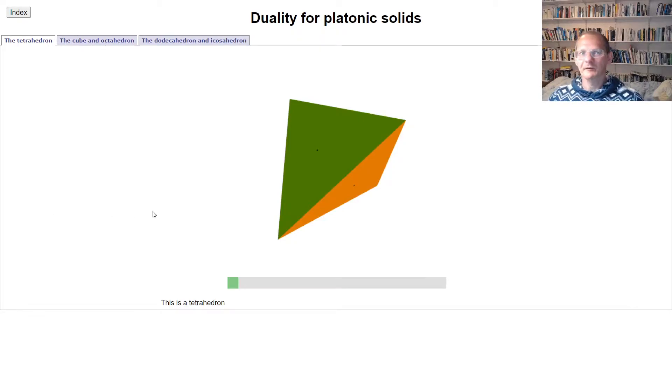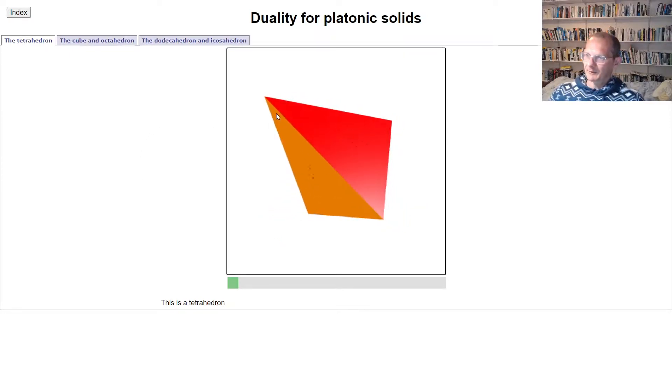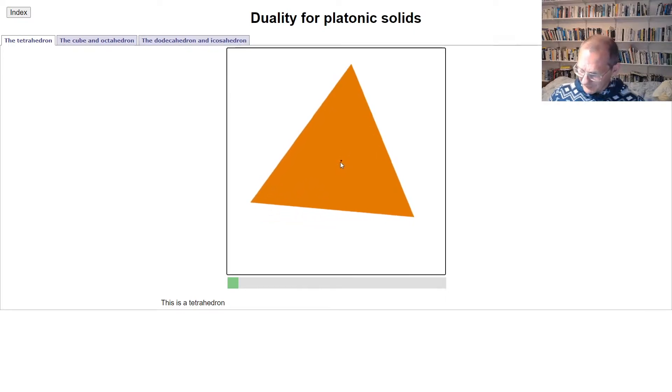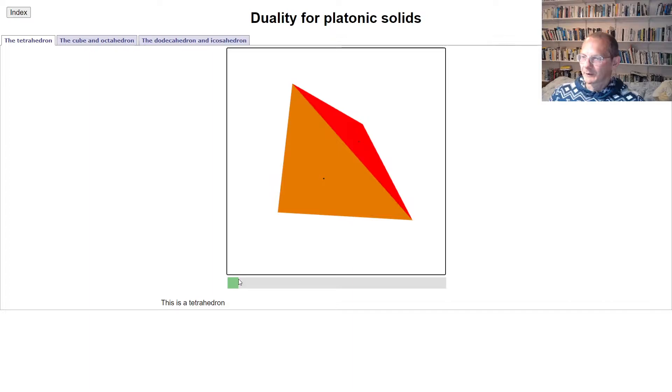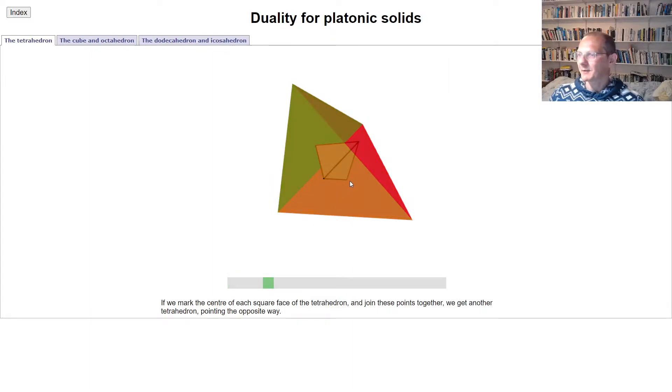In this video we're going to explain the duality relations between the different platonic solids. We're going to start by looking at the tetrahedron, which you've got here, and you'll notice that in this picture we've put a little dot at the center of each face of the tetrahedron. So what we're going to do is we're going to connect up these dots, so we're going to connect up the centers of the various faces.